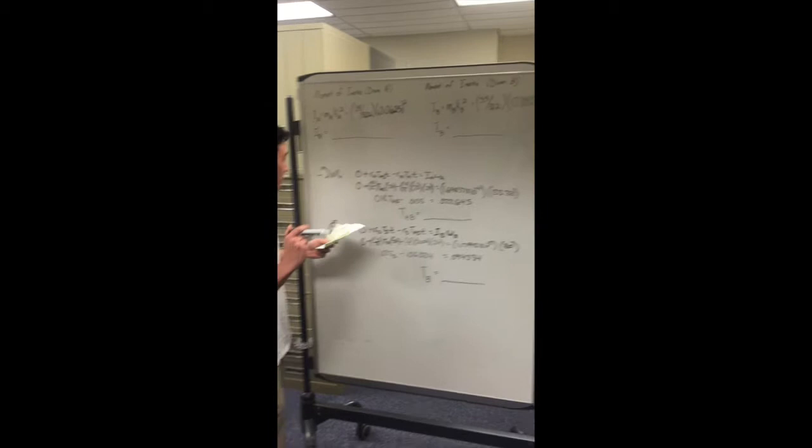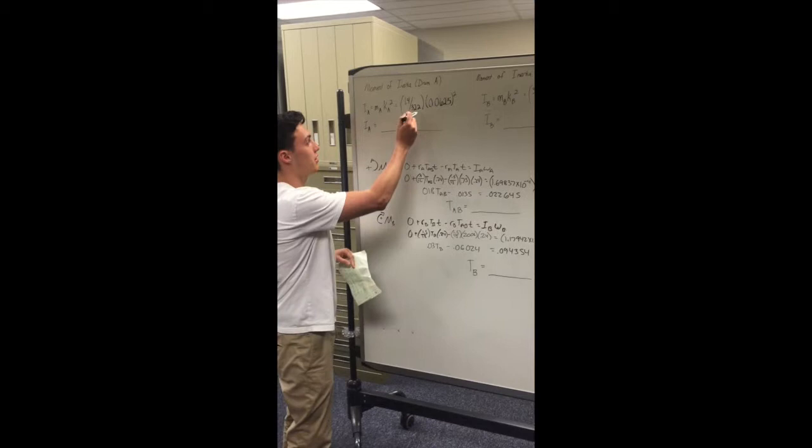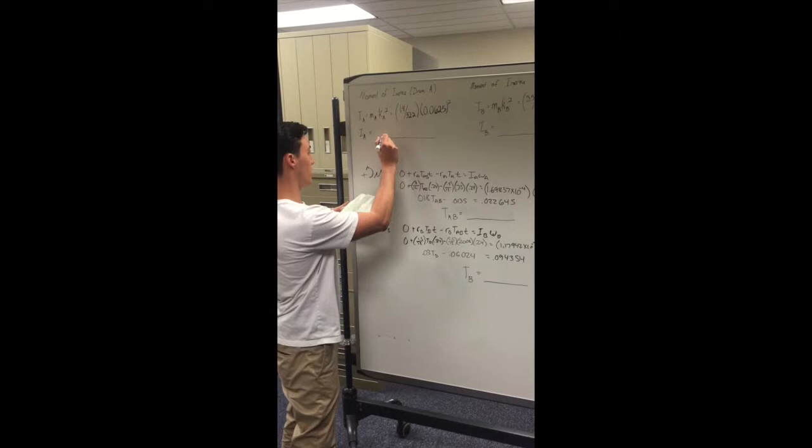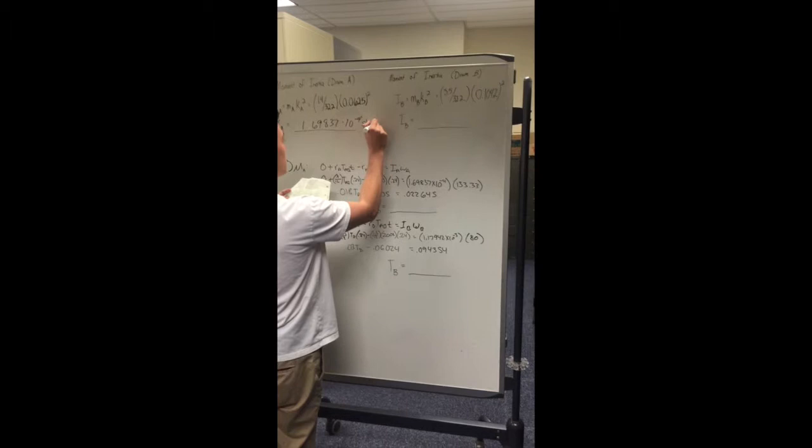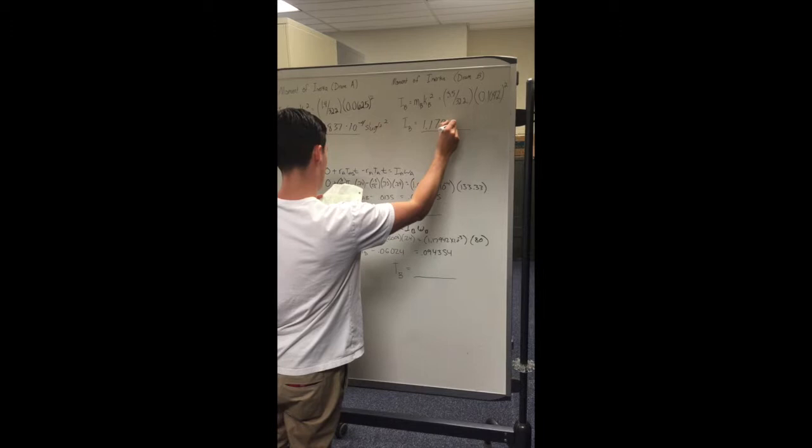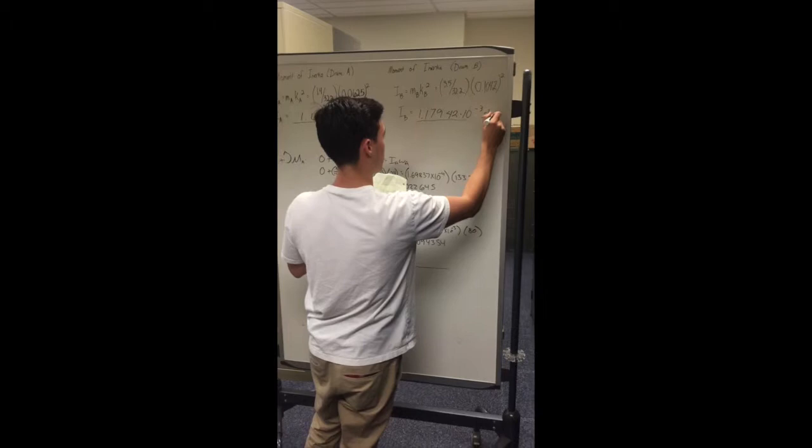Here, you're just dividing by the acceleration due to gravity to get it into the mass term. So, the inertia of A is 1.69837 times 10 to the negative fourth slug feet squared. And then, 1.17942 times 10 to the negative third slug feet squared.